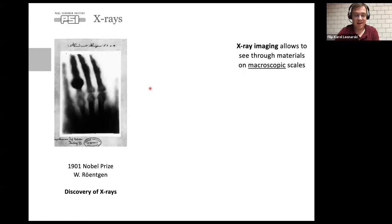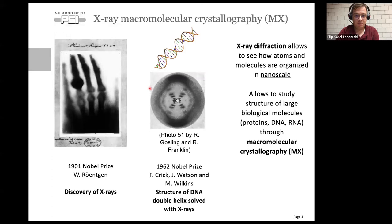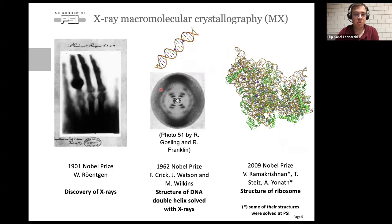You probably know x-rays for the way they can penetrate matter and allow us to see inside it. But it's not only imaging on a macroscopic scale, it's also on the nanoscale. X-rays allow us to know how atoms organize themselves into molecules and bigger structures. Photo 51, made by Gosling and Franklin, allowed Watson and Crick to find how the double helix of DNA looks like.